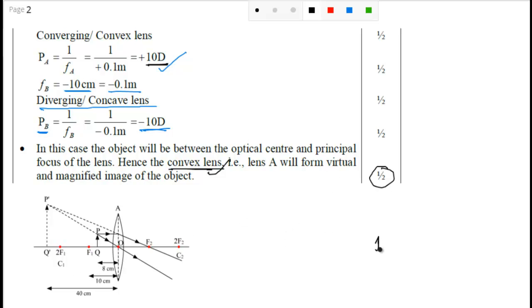So for that you will get one mark. This is very simple. Your object is here in between your principal focus and optical center. And one light is going parallel to the principal axis.